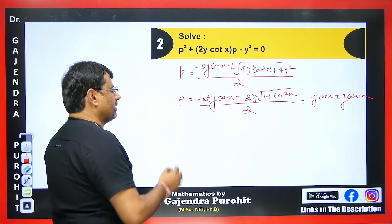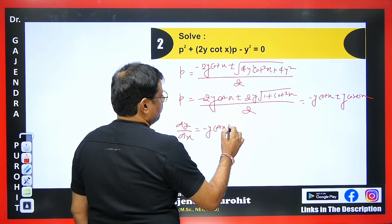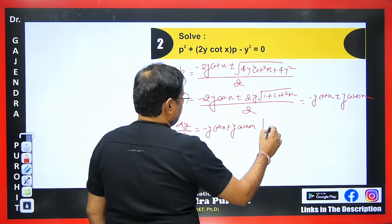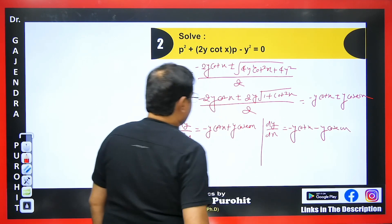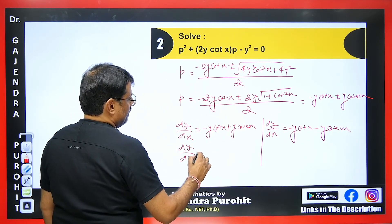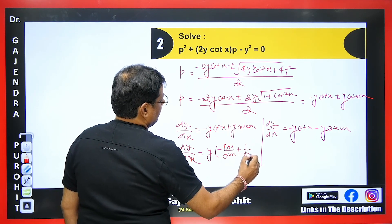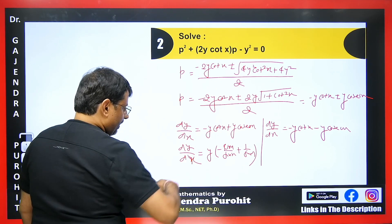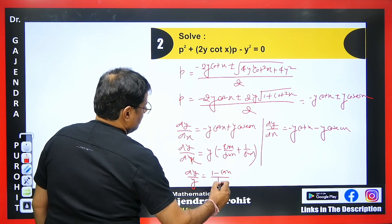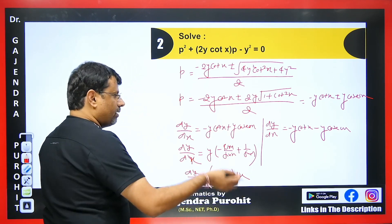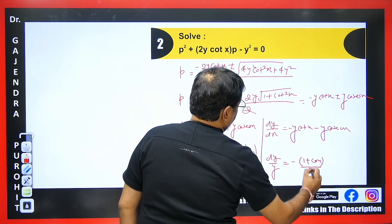We write dy/dx = −y·cot x + y·cosec x and separately dy/dx = −y·cot x − y·cosec x. Taking y common, we simplify: in the first case dy/dx = y·(−cos x + 1)/sin x, giving dy/y = (1 − cos x)/sin x · dx. In the second case, dy/y = −(1 + cos x)/sin x · dx. We integrate each.